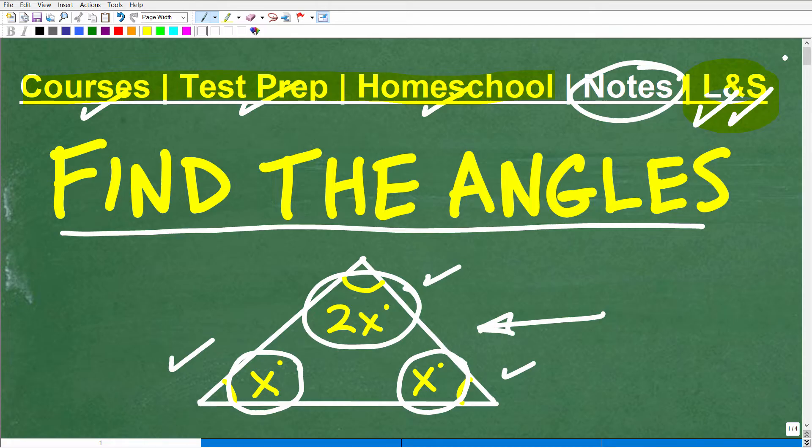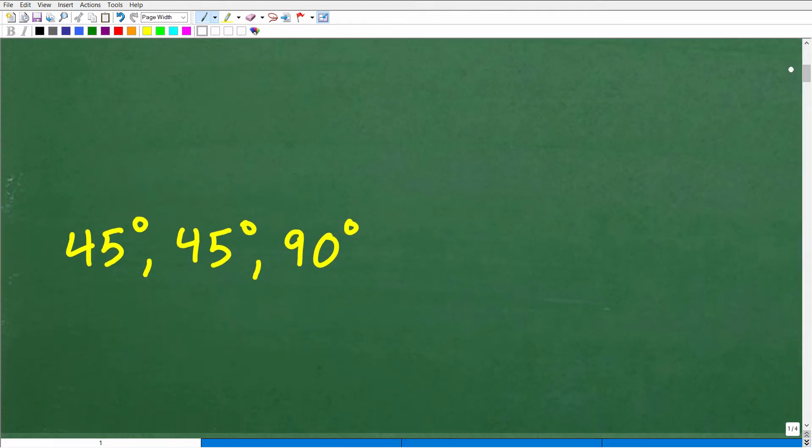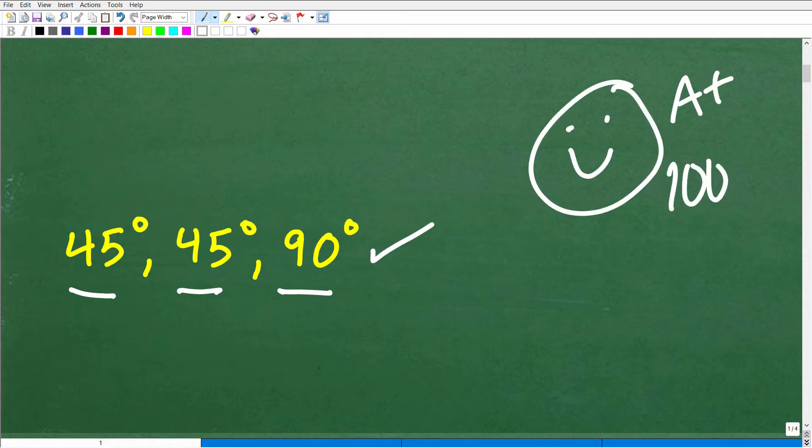This is not that difficult, but let's go and see the answer right now. The angles are 45 degrees, 45 degrees, and 90 degrees. So how did you do? Well, if you got this right, let's go ahead and celebrate by giving you a nice little happy face and an A+, 100%, and multiple stars so you can tell your friends and family that you know a thing or two about finding the angles within a triangle.